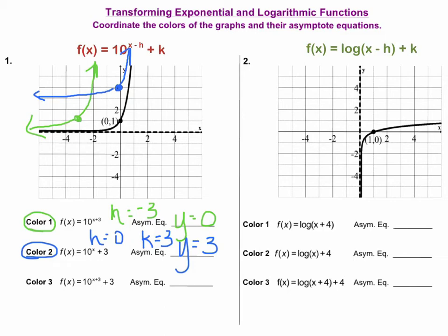Now let's look at a third example, where we have both an h and a k value other than zero. Here I have an h value of negative three and a k value of positive three. I start from the key point, go left three units, and then go up three units. That will put my point right there, and so now I can draw the rest of my curve. My equation for my asymptote will be y equals three.